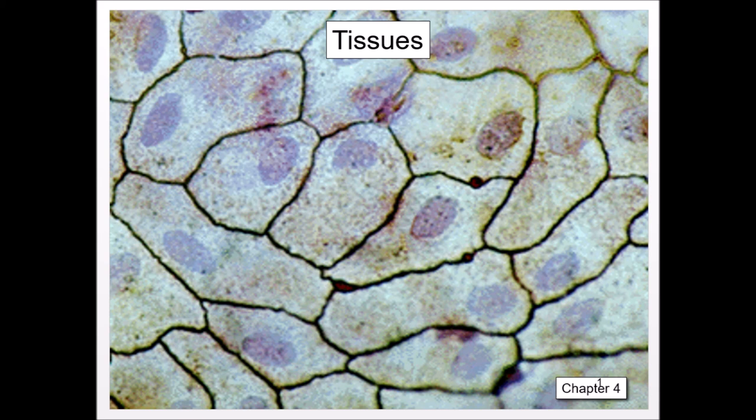Tell me about the different types of muscle. Why would you have smooth muscle in some places, skeletal muscle in others, and cardiac muscle in others? What makes skeletal muscle special? What characteristics of skeletal muscle separate it out, especially compared to cardiac muscle? What are some unique characteristics of cardiac muscle that are completely unlike the other two muscle types? You need to know about this and be able to explain it.